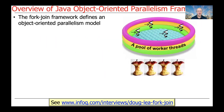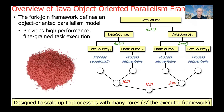The fork-join framework defines an object-oriented parallelism model which provides high-performance, fine-grained task parallelism. It's designed to scale up to processors with many cores. In contrast, the more coarse-grained executor framework was designed for processors with relatively few cores.